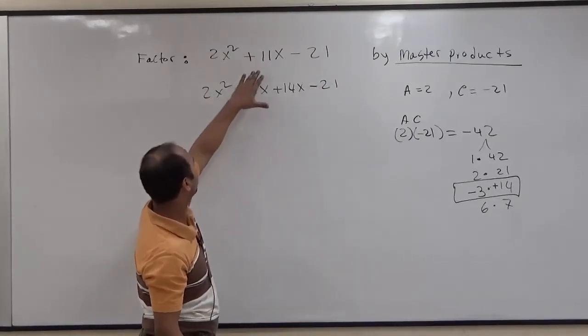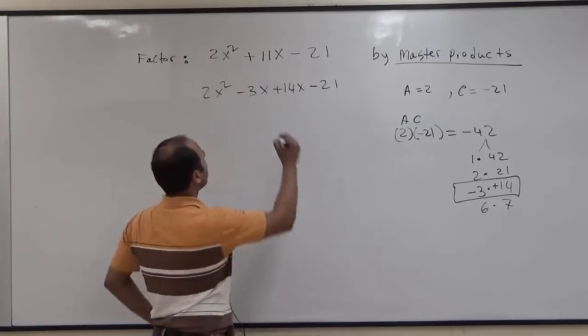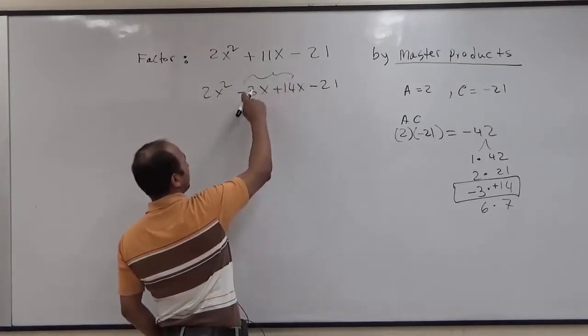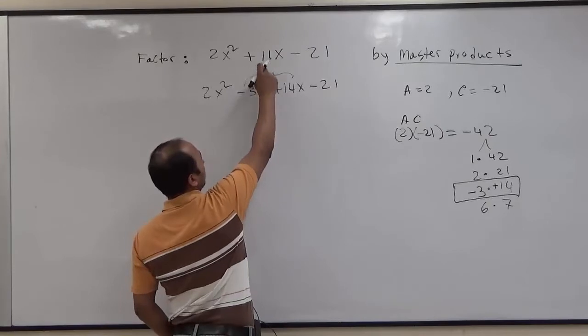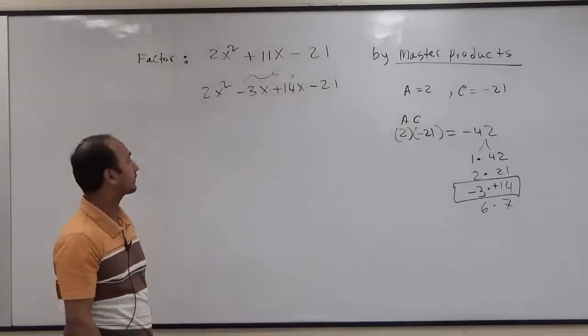You're going to say, what happened to the 11x? Well, when we combine positive 14x and negative 3x, we'll go back to 11x.